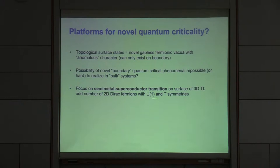In this talk, we'll focus on a particular type of quantum criticality, which is a semi-metal to superconductor transition on the surface of a 3D topological insulator. This will be a system that has an odd number of 2D Dirac fermions with U(1) particle number conservation and time reversal symmetries.